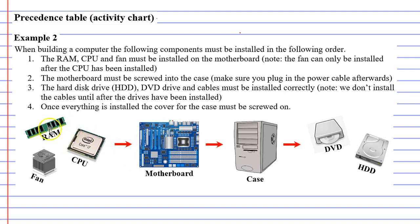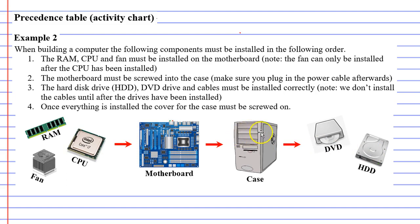Once we've put these components onto the motherboard, the motherboard then needs to be screwed into the case. And once we've done that, there's a power cable that plugs into the motherboard. We also need to install the DVD drive and the hard drive into the case, and once we've done that, we just need to connect some cables to the DVD drive and the hard drive. Finally, we screw the cover on the case once all the components have been installed.